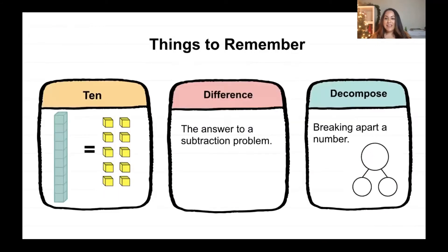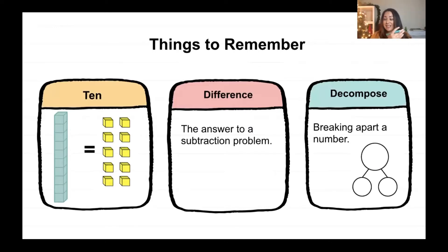Things to remember: we have a unit of 10 and it breaks down to 10 ones, and when we add it's the opposite — 10 ones is the same as one unit of 10. The difference is the answer to a subtraction problem, and decomposing means breaking apart a number.